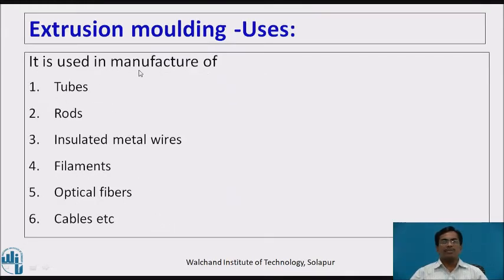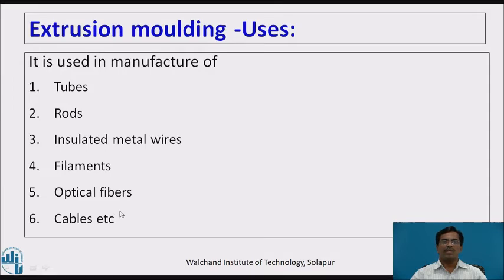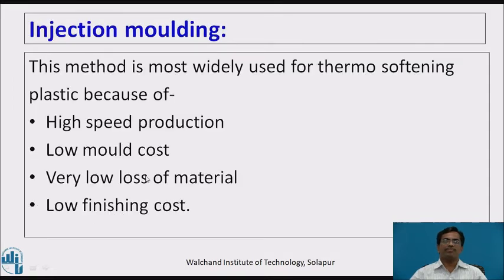Extrusion molding is used in the manufacture of tubes, rods, insulated material wires, filaments, optical fibers, cables, etc. This method is widely used for thermosoftening types of plastic.